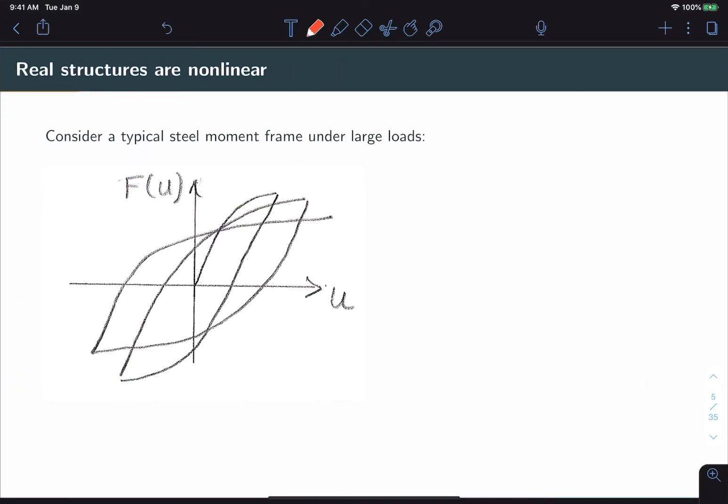Another big limitation of the tools we've discussed so far is that they only deal with linear systems. You can imagine in the case of an earthquake, a linear system is really not that interesting because we're really interested in large loads, large displacements. Here's what a typical single-story moment frame might look like if it deforms plastically.